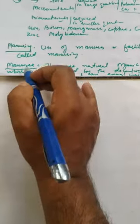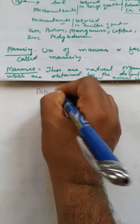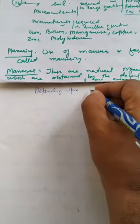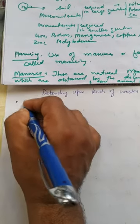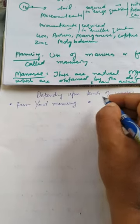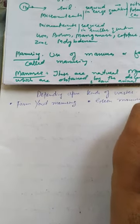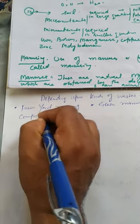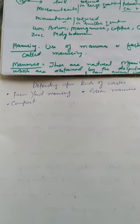Depending upon the kind of wastes, manures are of different types. The first is farm yard manure, the second is green manure, and the third is compost.